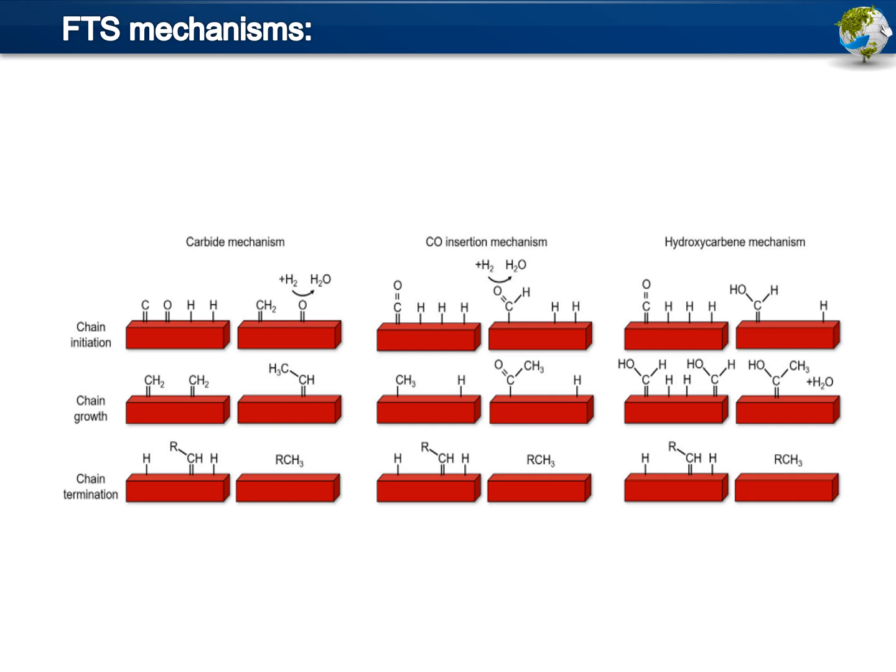The CO insertion mechanism proposes the adsorption of CO followed by reaction with a hydrogen atom on the surface to form an aldehyde functionality, and then chain growth takes place by insertion of CO, with chain termination occurring by hydrogenation. The third mechanism, the hydroxycarbene mechanism, proposes the adsorption of CO followed by reaction with a hydrogen atom on the surface to form the hydroxycarbene group, with chain growth by condensation polymerization along with removal of a water molecule, and chain termination proceeding via hydrogenation.